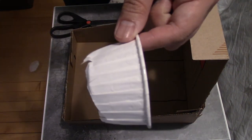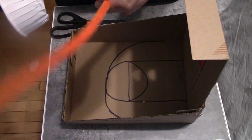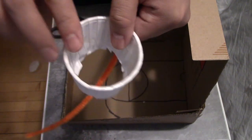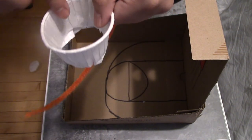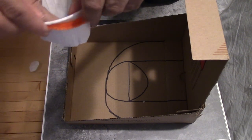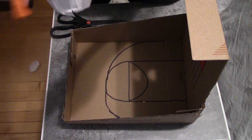Now that you have your basketball hoop, you're going to want to grab your pipe cleaner or your wire and you're going to wrap it around the top of your cup. So I'm going to take this, just put it around my cup, just like that. Wrap it around.